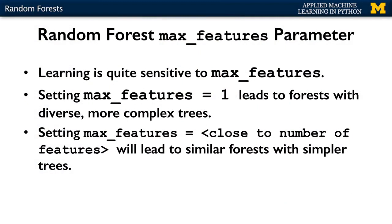The random forest model is quite sensitive to the max_features parameter. If max_features is set to 1, the forest is limited to splitting on a single randomly selected feature, so the trees will likely be very different from each other and possibly have many levels to produce a good fit. On the other hand, if max_features is high — close to the total number of features — the trees will tend to be similar and probably require fewer levels, using the most informative features.